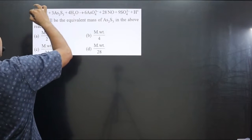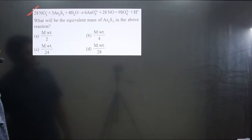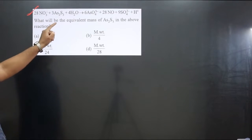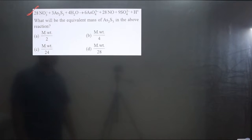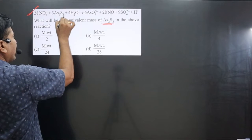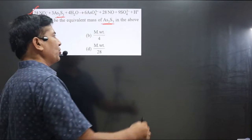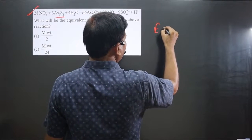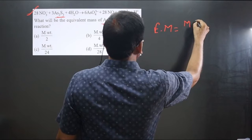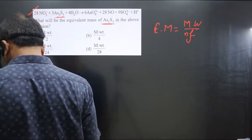In this question, a balanced reaction is given — you can see the coefficients are included, meaning a balanced equation is given. The question asks: what will be the equivalent mass of H₃AsO₃ in the above chemical reaction? For this reactant we have to calculate the equivalent mass. The formula is: equivalent mass = molecular weight divided by n-factor.